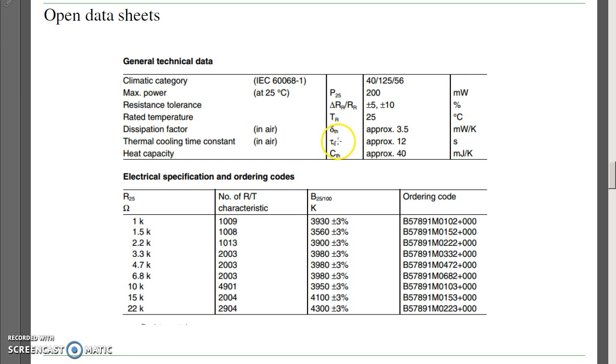Some of the other parameters tell you, like the dissipation factor, this will dissipate 3.5 milliwatts per degree Kelvin. If you apply current through the thermistor, it produces heat, as I squared R, that heating will warm up the thermistor. At equilibrium, it'll be 1 degree Kelvin warmer than the environment for every 3.5 milliwatts you're dissipating.